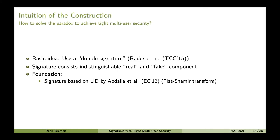What is the intuition of our construction? How do we solve this paradox to achieve tight multi-user security? The basic idea we use is a double signature, which was already used by Bada et al. at TCC 2015 to achieve tight multi-user security. The main intuition is that we have a signature consisting of a real component, for which we know a secret key used for simulation, and a fake component, which we can use for extraction. The foundation of our scheme is signatures based on lossy identification schemes by Abdalla et al., which is basically the Fiat-Shamir transform applied to a lossy identification scheme.